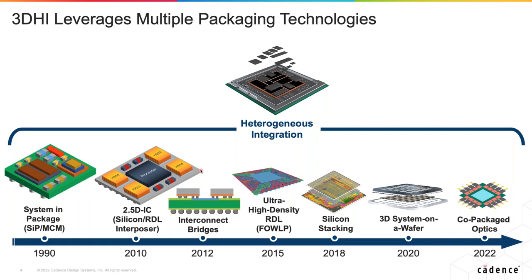Maybe everyone doing chiplets will standardize on some future super package that meets the needs of cost and performance. If we narrow the scope of packaging, flows become a lot simpler because we can build them for a specific packaging type. But that's not reality today. People are building the same device in silicon interposer and RDL, and whichever gets the same performance at 30% less cost, they'll go with that approach.